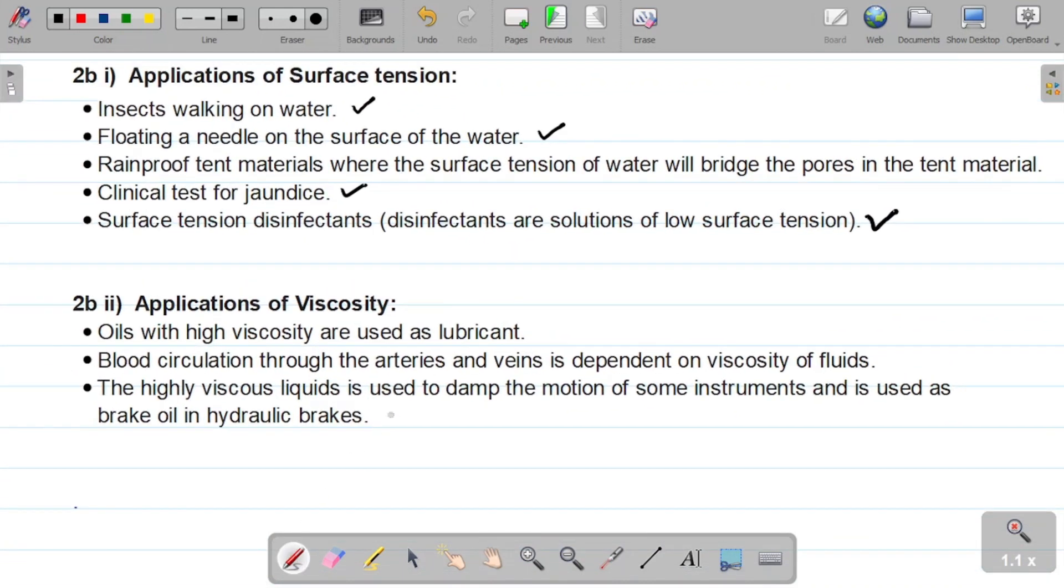Let's look at the application of viscosity. Now oils with high viscosity are used as lubricants. Also, blood circulation through the arteries and veins is dependent on the viscosity of fluids. And then finally, we can have that the highly viscous liquid is used to damp the motion of some instruments and is used as brake oil in hydraulic brakes.